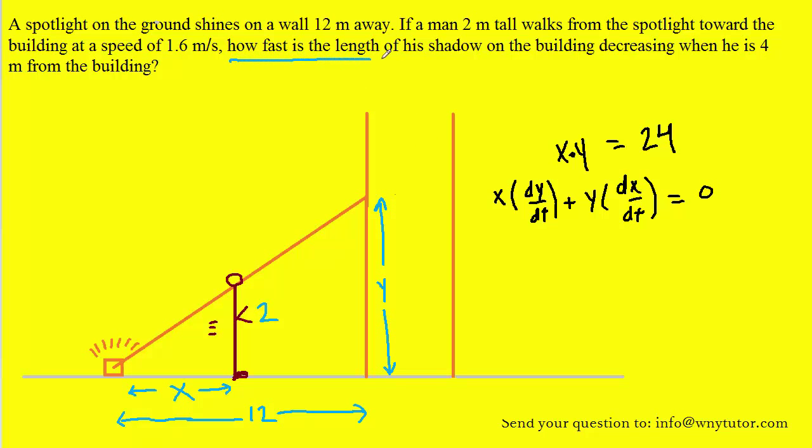Since the question is asking how fast is the length of his shadow decreasing and we know that the shadow is labeled by Y, what we're really being asked to calculate is dy/dt. That would represent the rate at which his shadow is changing. So we need to solve this equation for dy/dt. We can do that by subtracting Y dx/dt from both sides of this equation and then we could divide both sides of the equation by X.